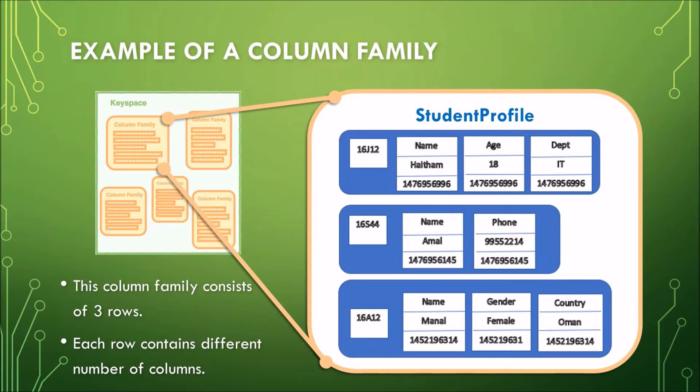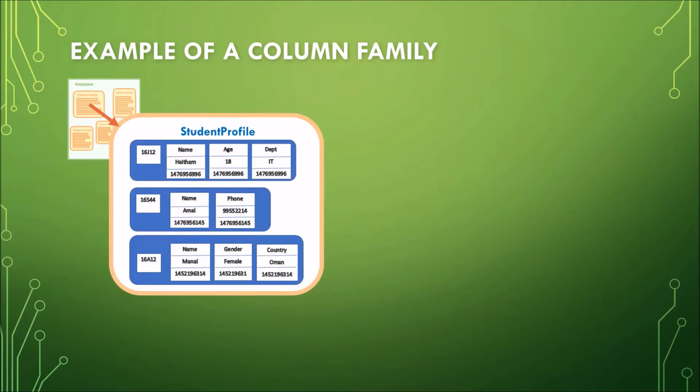So what this means is that the columns don't have to match the columns in other rows. They can have different column names and different data types. So let's take a further look at one of the rows of this student profile column family.